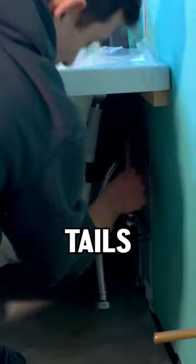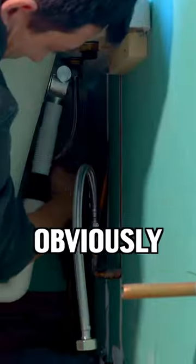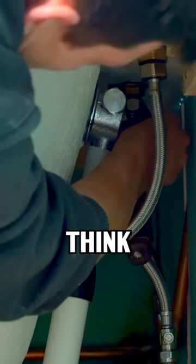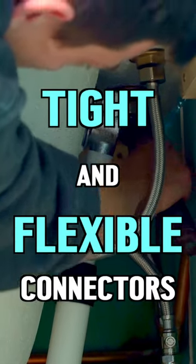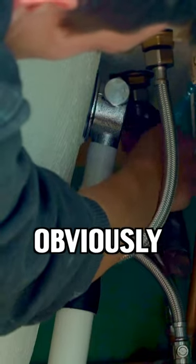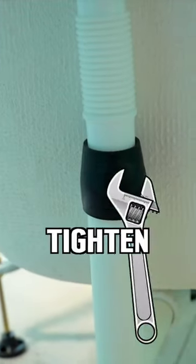We can now bolt our flexible tails up to the actual taps. You don't want these to have too much of a kink in them. People always think you have to over-tighten flexible connectors, but they do have a rubber sealant, so you can damage that rubber if you tighten it too much.